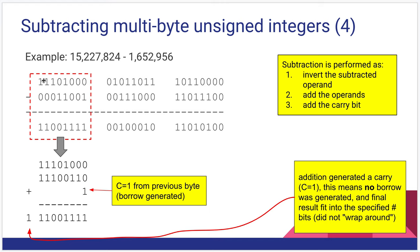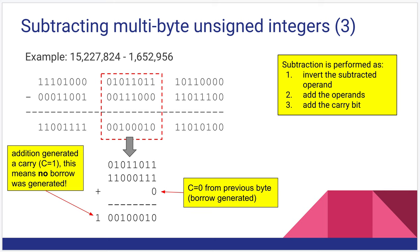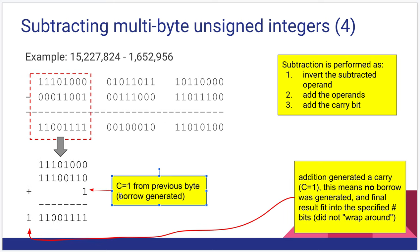This actually should be no borrow generated. We add in the carry of one from the previous slide, which means there was no borrow generated. And this is the result we get. And we even get a carry out of one here. But remember, a carry out of one from our final result means we did not generate a borrow. And in this case, since we're subtracting, that means the overall result we get, the overall 24-bit result, actually fit within our 24 bits. So we did not get this wrap-around effect that we would have gotten if our carry bit had been zero for subtraction.